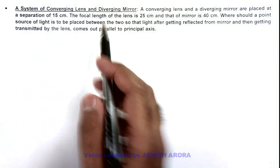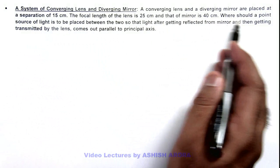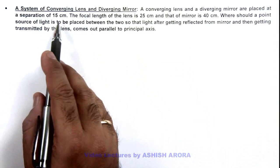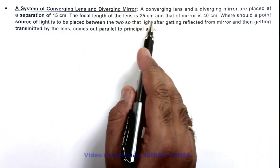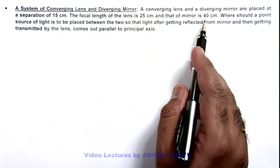Here we are given that a converging lens and a diverging mirror are placed at a separation of 15 centimeters. The focal length of the lens is 25 centimeters and that of the mirror is 40 centimeters.